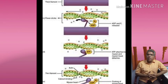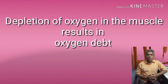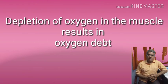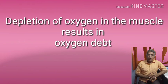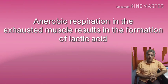During repeated contractions, oxygen gets exhausted within the muscle. As a result, the muscle runs short of oxygen — this is called oxygen debt. Under oxygen debt, the muscle enters an anaerobic phase forming lactic acid. This lactic acid accumulates within the muscle, leading to muscle fatigue.